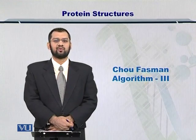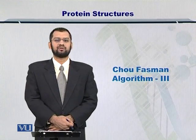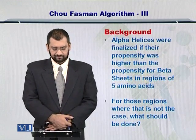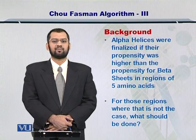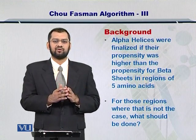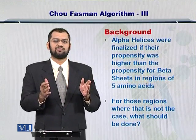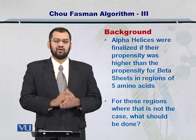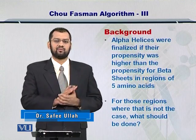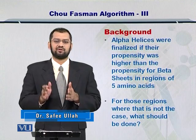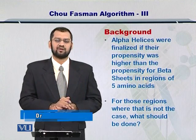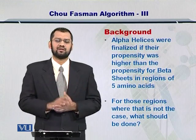Dear students, in this module I will continue to talk about the Chou-Fasman algorithm. We have already finalized the alpha helices, where the propensity for alpha helices for 5 contiguous amino acids was greater than the propensity for formation of a beta sheet. Once we have finalized the alpha helices, the remaining amino acids can now be evaluated for their tendency to form a specific secondary structure such as a beta sheet or a loop.